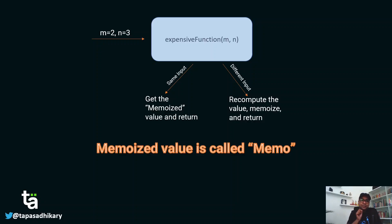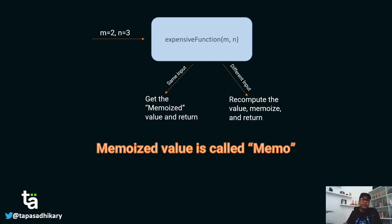This memoized value is called memo. Please notice the spelling: it is M-E-M-O-I-Z-E-D — it is not a spelling mistake. 'Memorized' with an R means the ability to store something in memory. 'Memoized' without the R is a computing capability where you return a temporarily stored cached value, and if there is a new argument you recompute, store it, and return it.